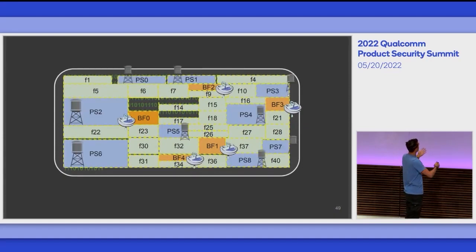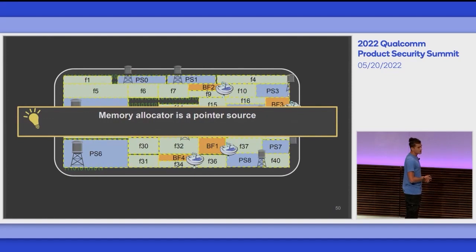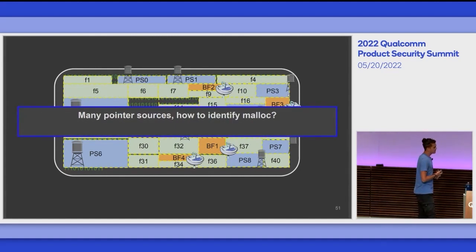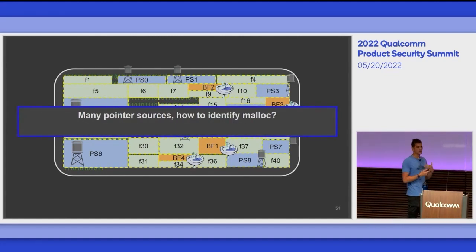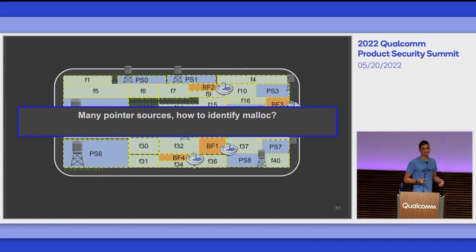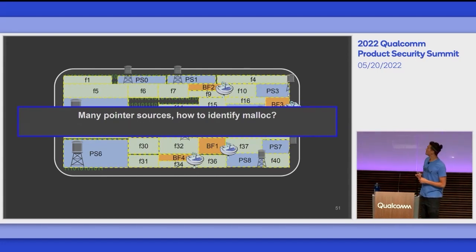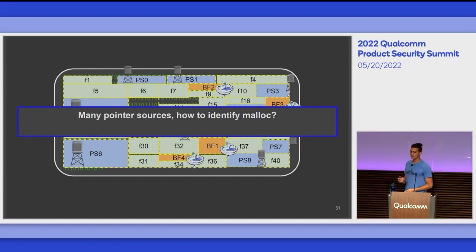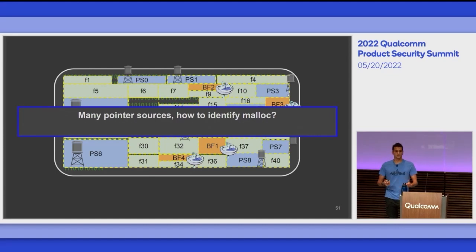We collect all functions whose return values define the arguments of basic functions — v25 has the static definition 'f19 return,' which is the hint it's flowing into our sink. So f19 becomes a pointer source. Now we have the sinks and the sources. Memory allocators are indeed pointer sources, but we can have many pointer sources identified, and looking into them manually is tedious. We want to identify malloc and be able to execute it precisely, because at the end of the day we want to do security checks.